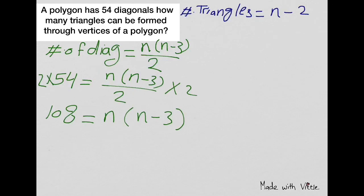Now I am going to distribute n into the quantity n minus 3. So 108 equals n squared minus 3n. Let your equation equal 0. n squared minus 3n minus 108 equals 0.